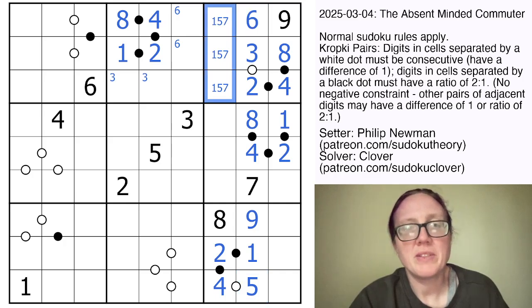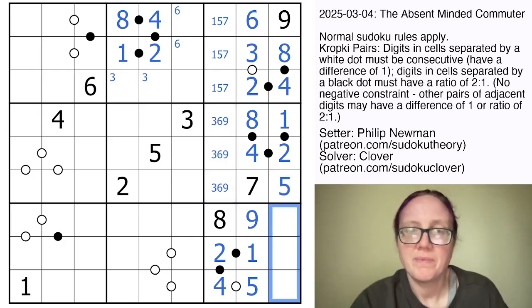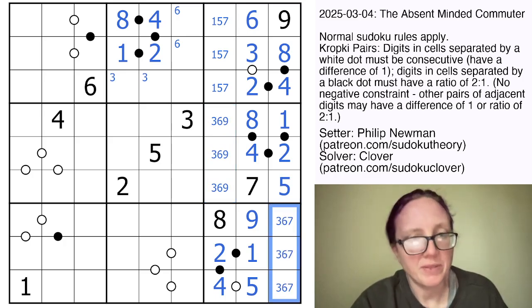These will be 1, 5, and 7. These are going to be 3, 6, and 9, and that makes our last digit there a 5. And these are going to be 3, 6, and 7 to finish off this region.